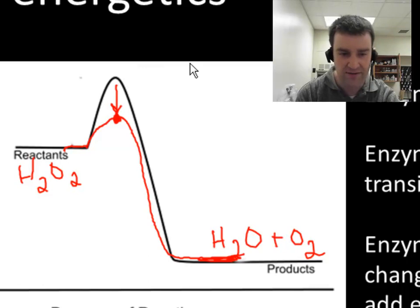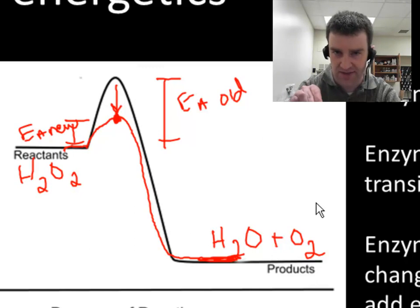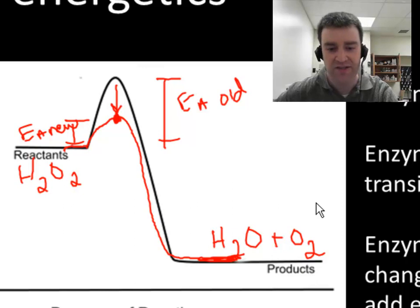This might be the old activation energy right here. And then the new activation energy is considerably lower. And the idea is with such a lowered activation energy, maybe most of the molecules at the cell's temperature are able to get over that very small hill. And so the reaction occurs much, much, much faster.